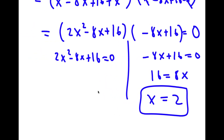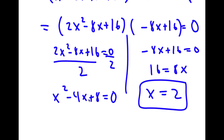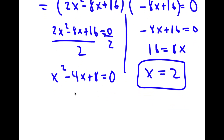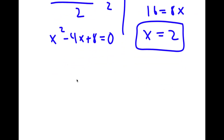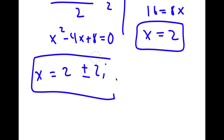For 2x squared minus 8x plus 16 equals 0, I'm going to divide both sides by 2, so I get x squared minus 4x plus 8 equals 0. Using the quadratic formula, you get x is equal to 2 plus or minus 2i. So that's two more solutions. These are my three solutions to this problem.